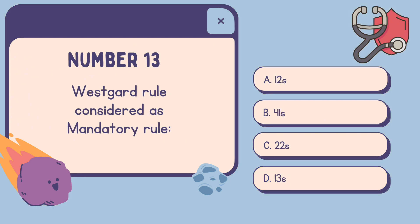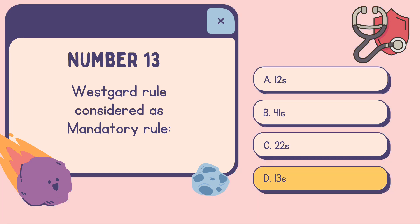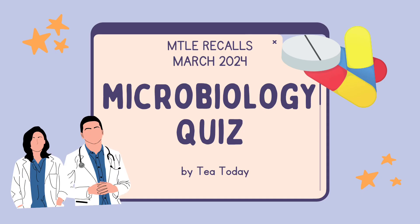Number thirteen: Westgard rule considered as mandatory rule — A. 1-2S. B. 4-1S. C. 2-2S. D. 1-3S. The correct answer is D. 1-3S. So that's all for this video.